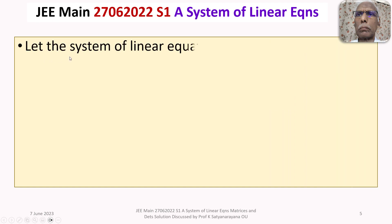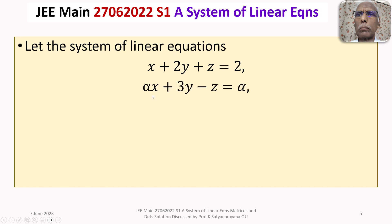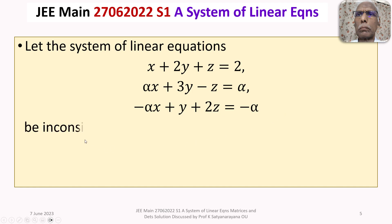The given question is: let the system of linear equations — x plus 2y plus z is equal to 2, alpha x plus 3y minus z is equal to alpha, minus alpha x plus y plus 2z is equal to minus alpha — be inconsistent.